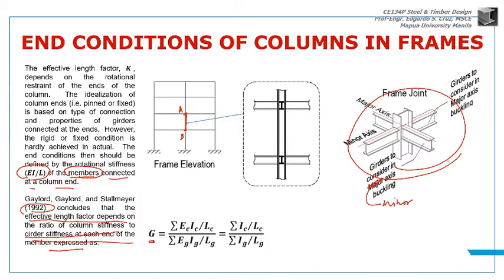The effective length factor depends on the ratio of the column stiffnesses to the girder stiffnesses at each end of the member. For column AB, I'll solve G at A, then get G at joint B. So we need to get two G values.